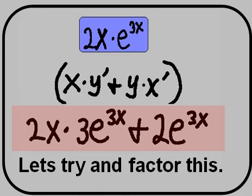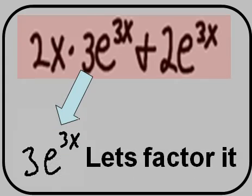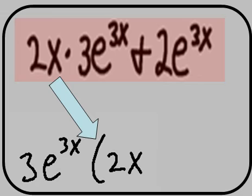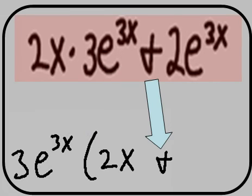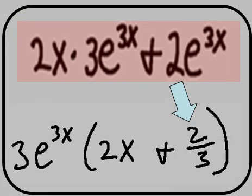Let's try and factor this. 3 times e to the 3x power times 2x plus 2 thirds.